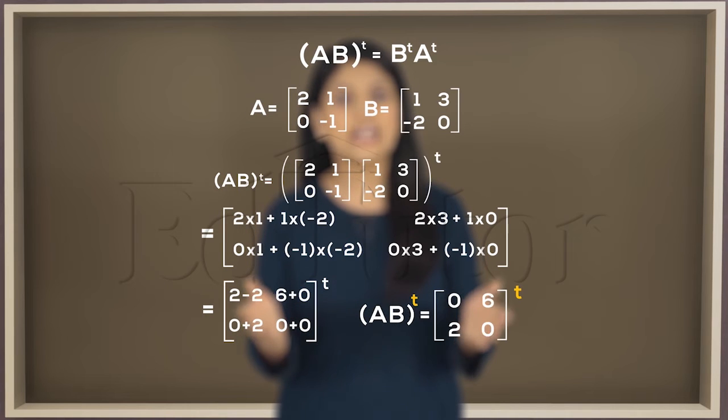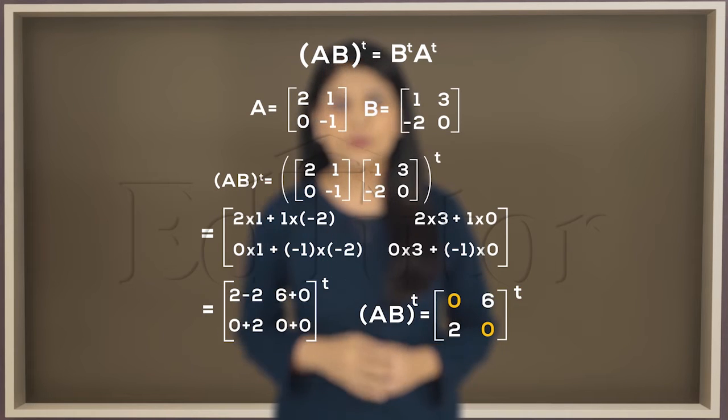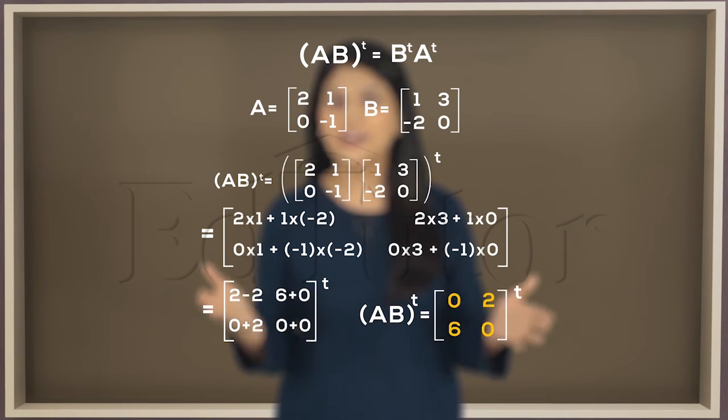Now we take its transpose. Change the rows into columns and we are done. We have the left hand side.